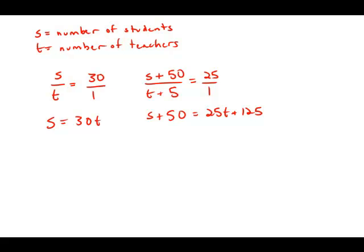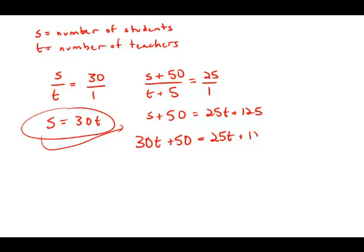Now, I'm particularly fortunate that this equation is already solved for S. So I'm going to just plug that in for S in the second equation. I get 30T plus 50 equals 25T plus 125.